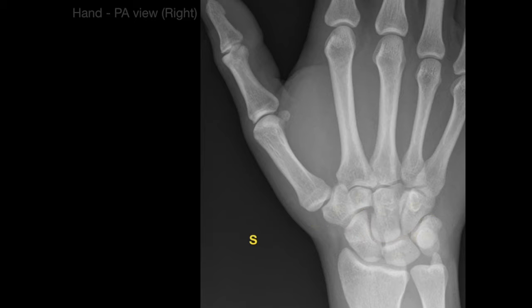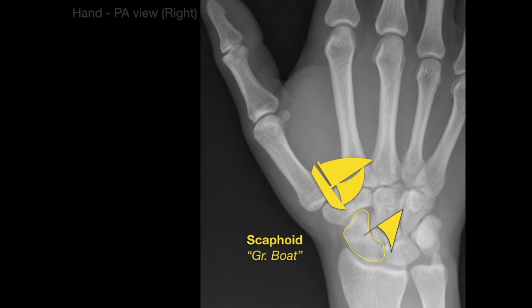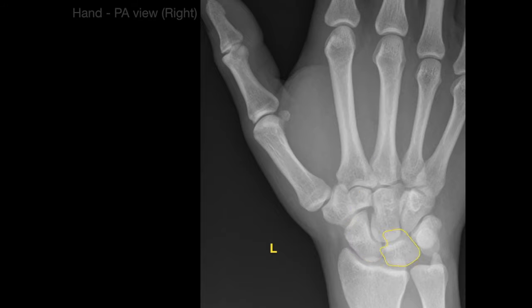S is for the scaphoid bone, which is Greek for boat — because if you look at it, it kind of looks like a boat. The scaphoid makes a large articulation with the distal end of the radius and has a unique blood supply, so watch out for avascular necrosis if it's fractured. L is for the lunate, which is Latin for moon, because the lunate bone looks like a half moon.